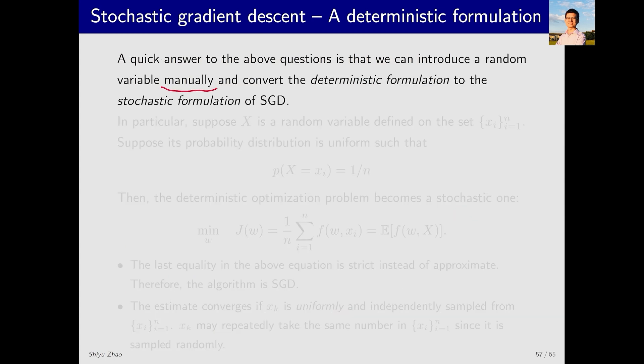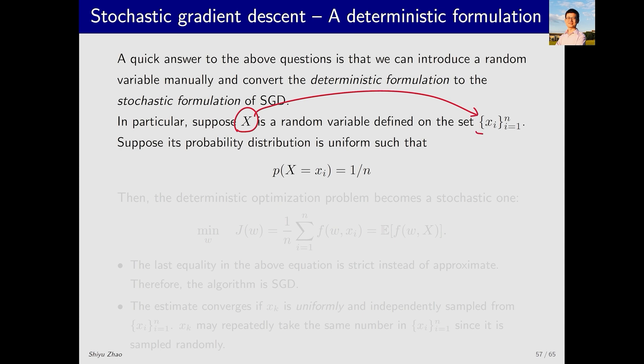In fact, we can address this problem by deliberately introducing a random variable. In this way, we can transform the problem that originally did not involve random variables into one that does. How do we do this? Suppose X is a random variable defined on the set {x_i}. Note that the set {x_i} could be any collection of numbers, not necessarily generated by any random process.